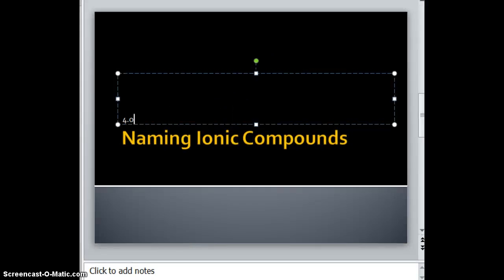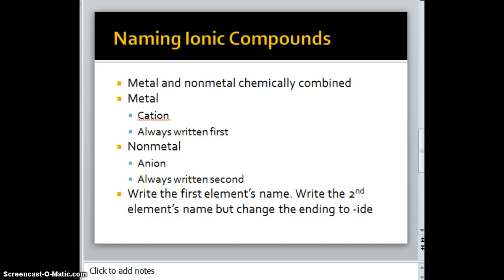Mrs. KJ here, and we are going to go over 4.02, naming ionic compounds. Remember, ionic compounds have a metal and non-metal chemically combined. The metal is the cation, which has a positive charge and is always written first. The non-metal is the anion, a negative ion, always written second. For naming, you write the first element's name, then the second element's name but change the ending to I-D-E. That's it.